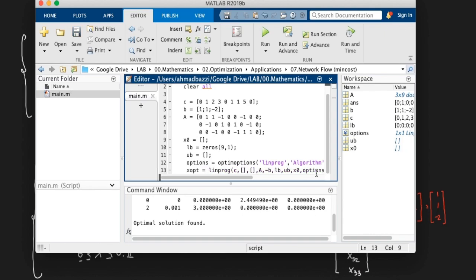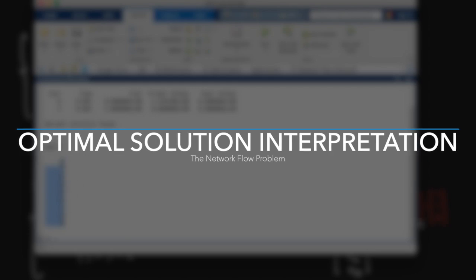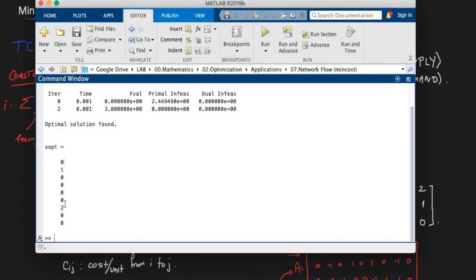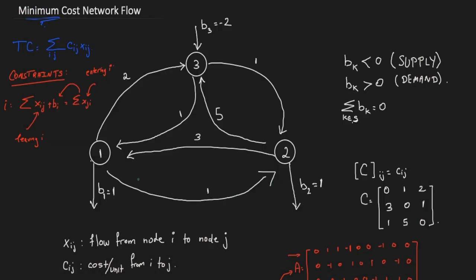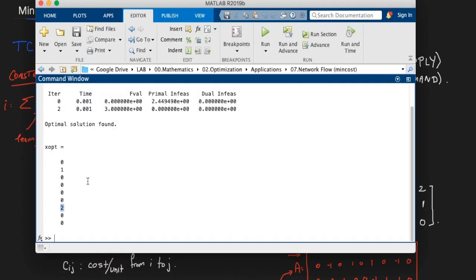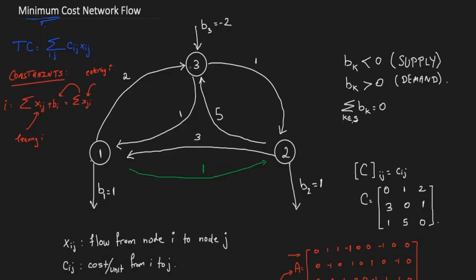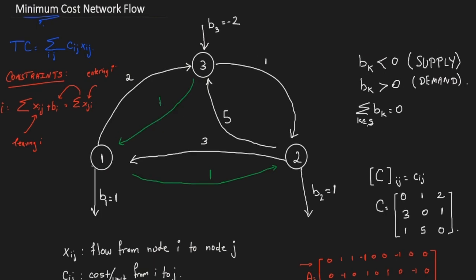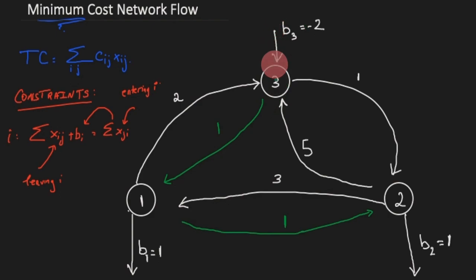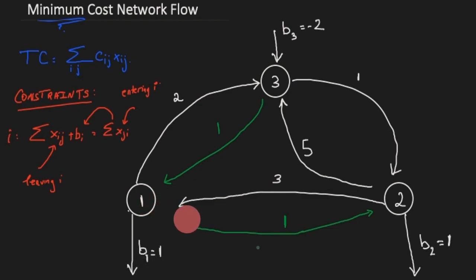Printing out x_opt, the optimal solution shows that everything is zero except two entries. Going back to our indexing — x11, x12, x13, ... — the nonzero entries are x12 and x31. This means the green path from one to two is part of the optimal flow, as is the path from three to one. Two units arrive at node three; both are pushed to node one, which keeps one unit to meet its demand and passes the other to node two.